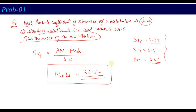The direct formula approach: just substitute the values and the question will be solved. Remember, I always say — try it by yourself first. That is one method. Now let's see the other method by which we can measure skewness.